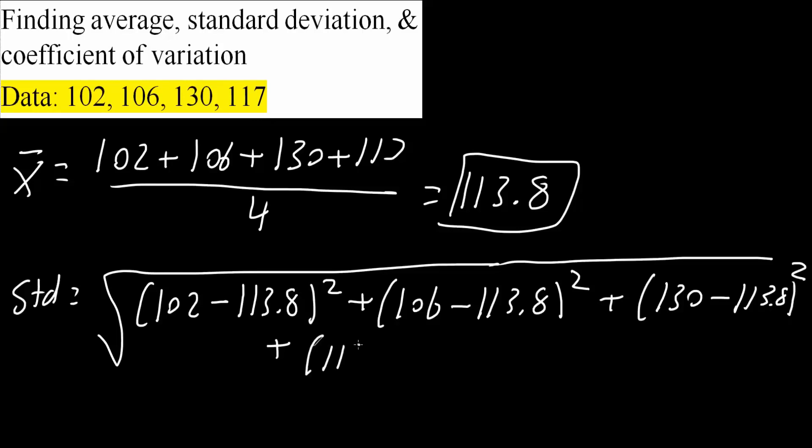Finally, we say 117 minus 113.8, close parenthesis, squared. And lastly, everything divided by the number we have. So 1, 2, 3, 4, minus 1.